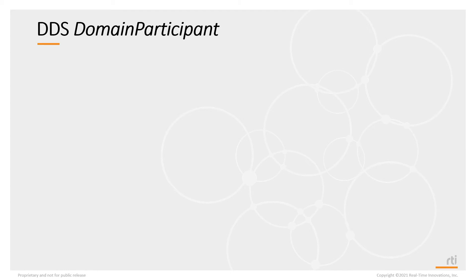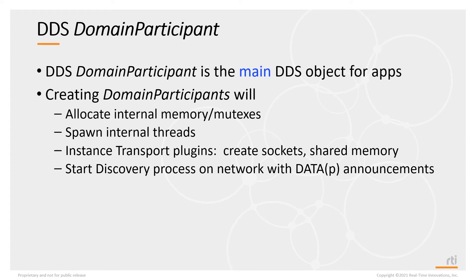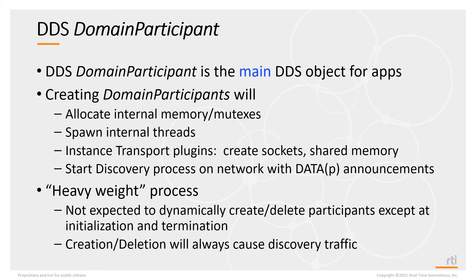Domain participants are the fundamental objects in DDS — the main DDS object for applications, similar in concept to sockets. Just as a UDP or TCP application must first create a socket, a DDS application must first create a domain participant. But creating a domain participant is not just creating a simple object. It allocates internal memory including mutexes and semaphores, spawns internal threads, instantiates transport plugins, creates sockets and shared memory segments, and starts trying to discover other applications on the network by sending out discovery announcements. So creating a domain participant is a heavyweight process.